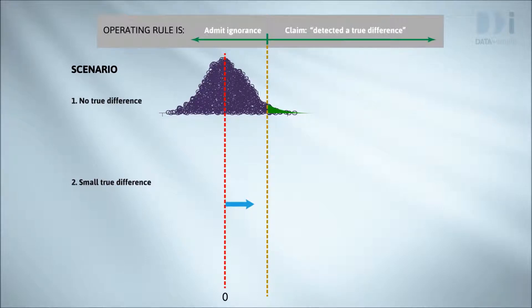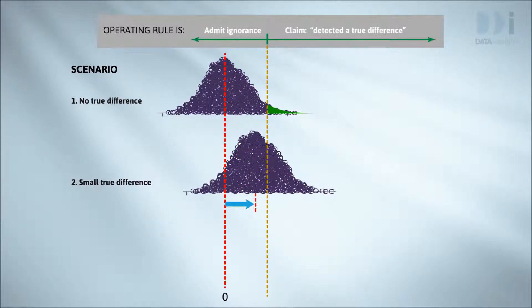Perhaps the true state of the world has the true difference given by the blue arrow in scenario two. Our observed difference would then be like a random draw from the second dot plot. There's a high chance that we would not end up claiming there was a true difference. If it was really important to know that there was a treatment difference and if in reality it was this big, then this would not be a satisfactory experiment to run.